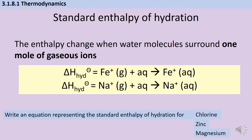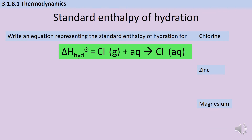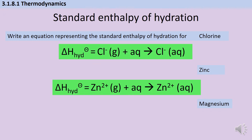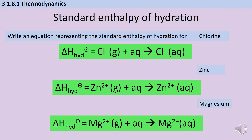For the hydration of chlorine, zinc, and magnesium: chlorine gives a chloride ion with a single minus charge, and we write + (aq) — we don't write H₂O because it's not taking part in the chemical reaction — giving aqueous chloride ions. For zinc we need a 2+ charge on the zinc ion, and likewise for magnesium.